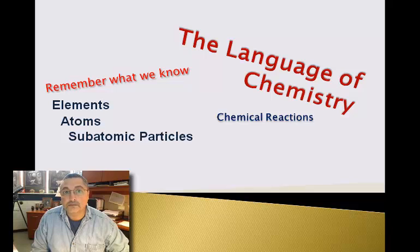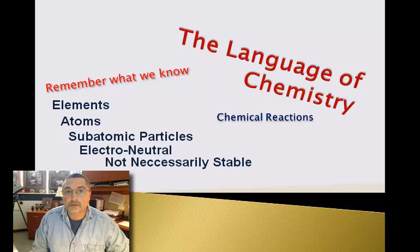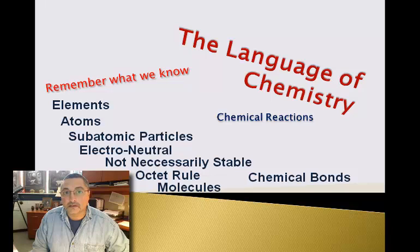We know that as read from the periodic chart, elements are electroneutral but not necessarily stable. To become stable they have to obey the rule of eight, which frequently causes them to interact with one another to create larger structures known as molecules. Those molecules are created by chemical bonds, and two types of chemical bonds that make molecules are ionic and covalent bonds.